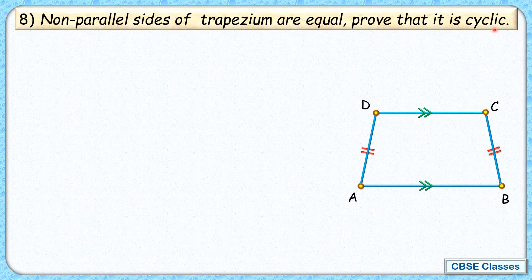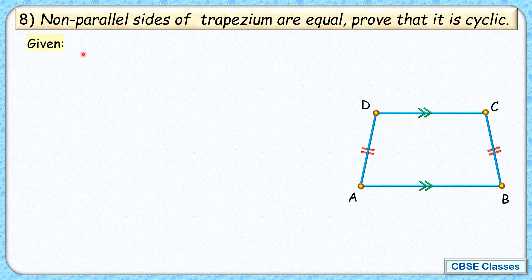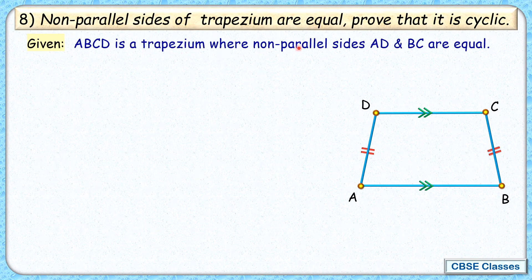That is AD and BC. They are given as equal. And we have to prove that it will be cyclic, that is we can draw a circle passing through all four vertices. So let's check the solution. We'll start with what's given to us: ABCD is a trapezium and non-parallel sides AD and BC are equal.